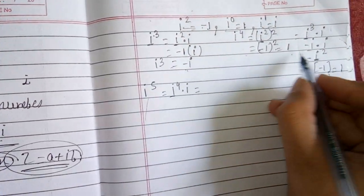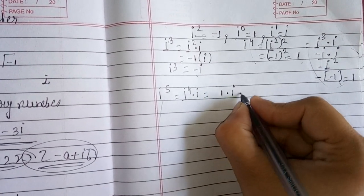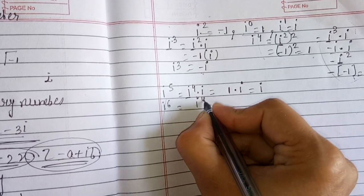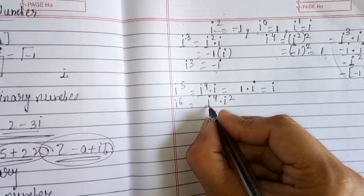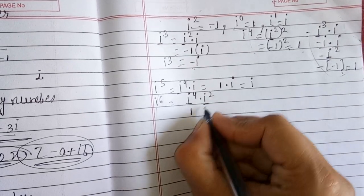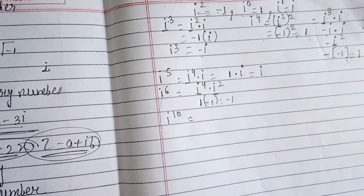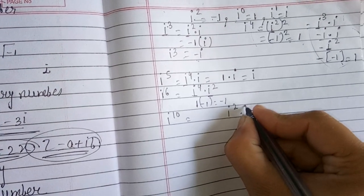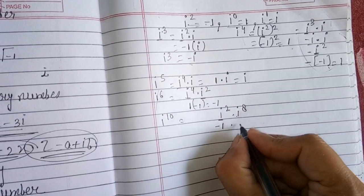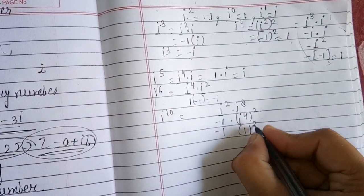The value of i⁴ is 1. So i⁵ equals i⁴ × i. Since i⁴ = 1, you don't need to expand it again. The pattern repeats with period 4.